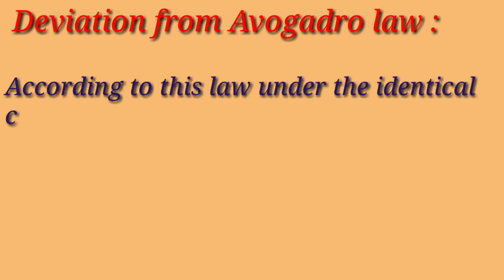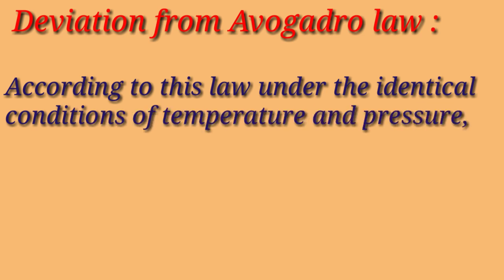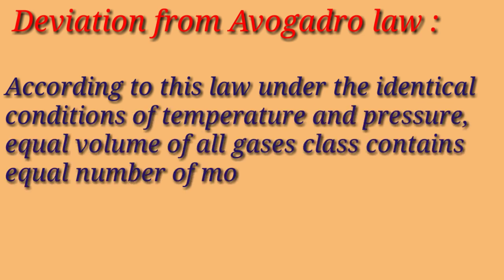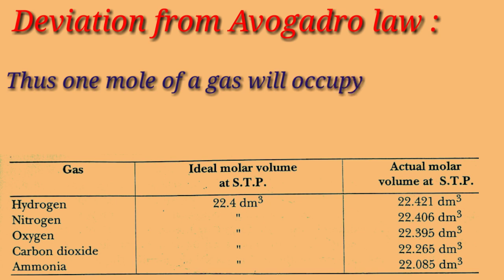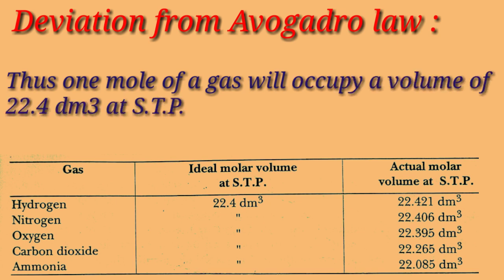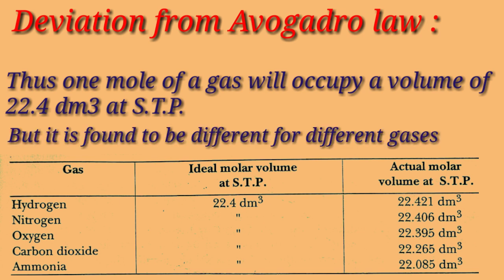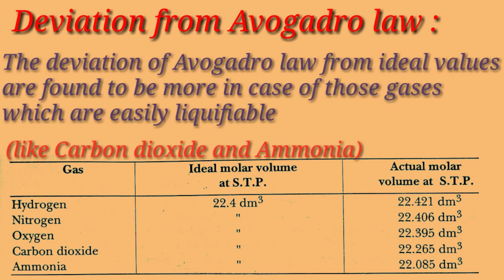Next is deviation from Avogadro's law. The law states that under identical conditions of temperature and pressure, equal volumes of all gases contain equal numbers of molecules. Thus one mole of a gas should occupy 22.4 dm³ at STP, but it is found to be different for different gases. The deviation is more pronounced for gases that are easily liquefiable, for example carbon dioxide and ammonia.